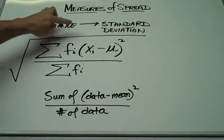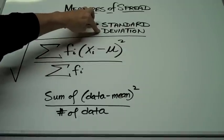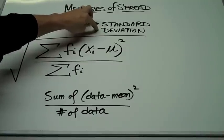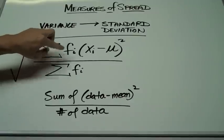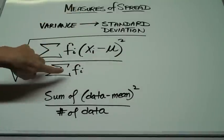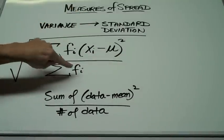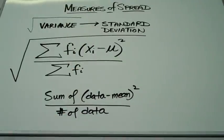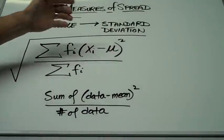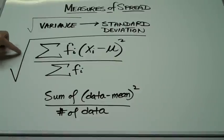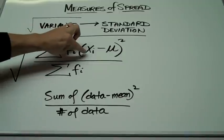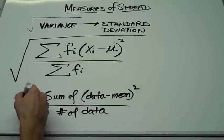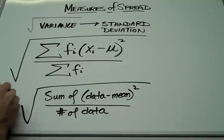Variance is very closely related to something called standard deviation. We often use standard deviation because it's in the same units as our mean. Mean and variance are not in the same units because the differences are squared. Standard deviation is in the same units as the mean. To find standard deviation, we take the square root of variance. So: the sum of our data minus the mean, squared, divided by the number of data — that expression is variance. Taking the square root of variance gives us standard deviation, and it will always be a positive number because we squared the differences.